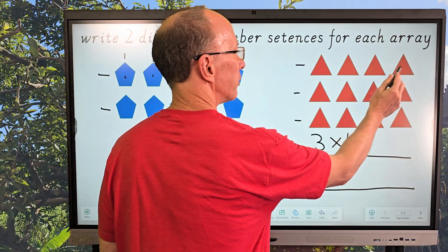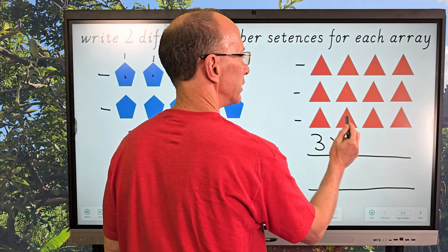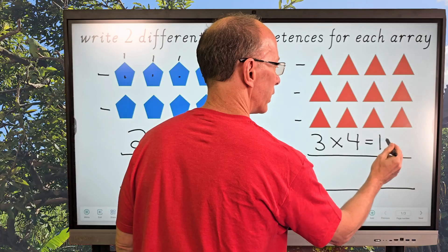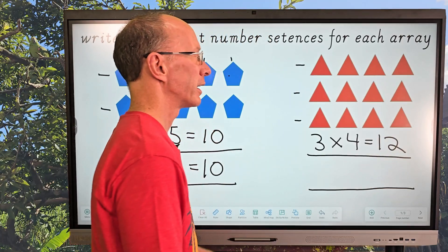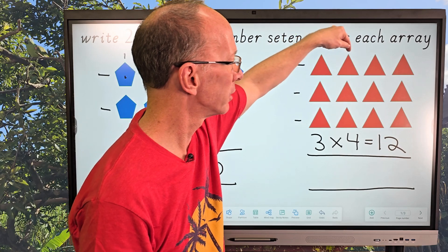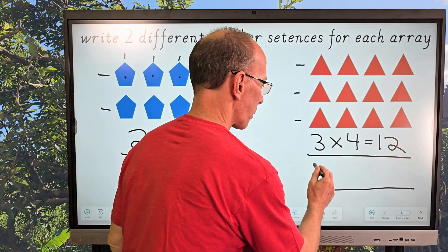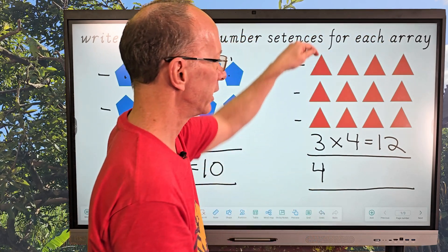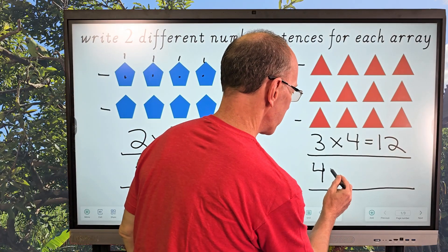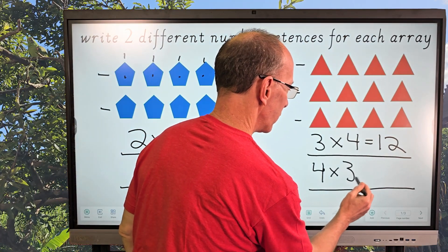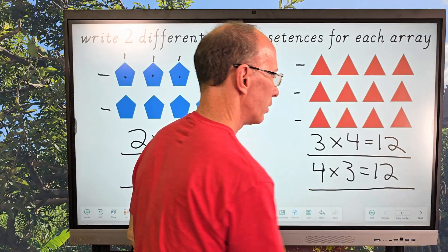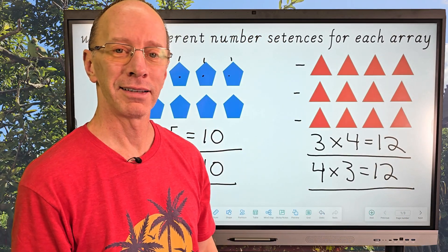One, two, three, four, five, six, seven, eight, nine, ten, eleven, twelve — I have twelve. Now counting the rows going down: one, two, three, four. And in each of those rows there are three. So four times three equals twelve. How cool is that?